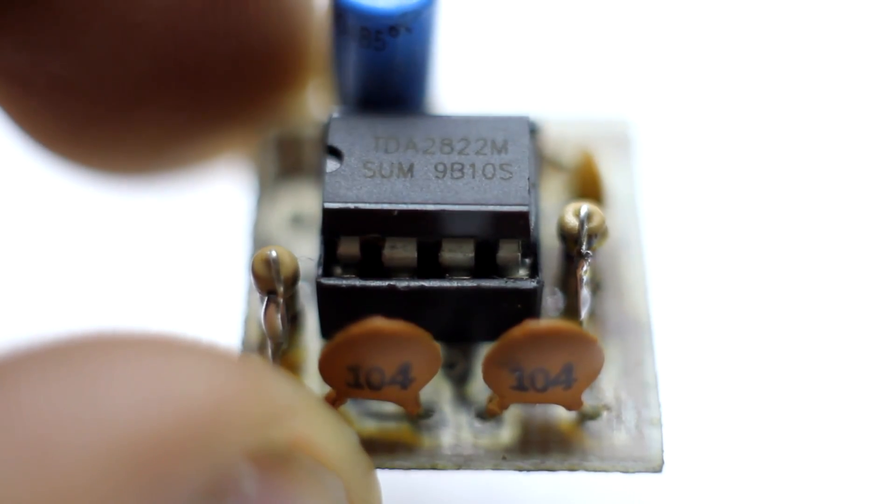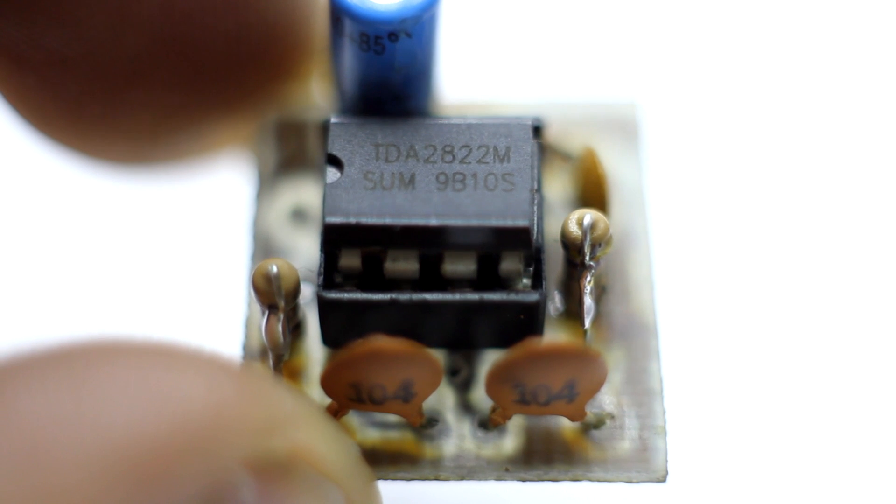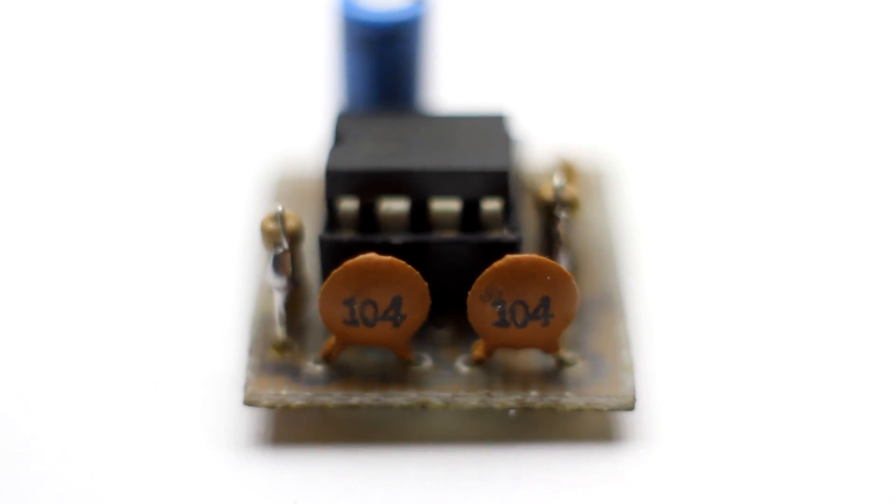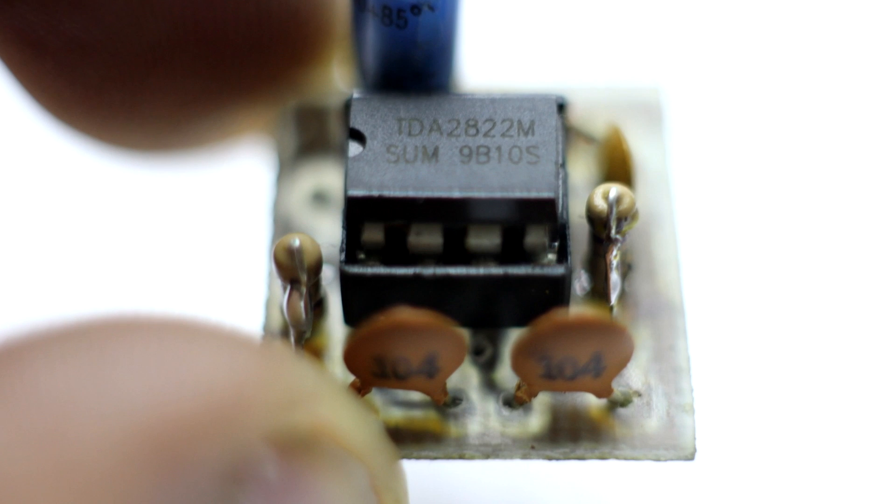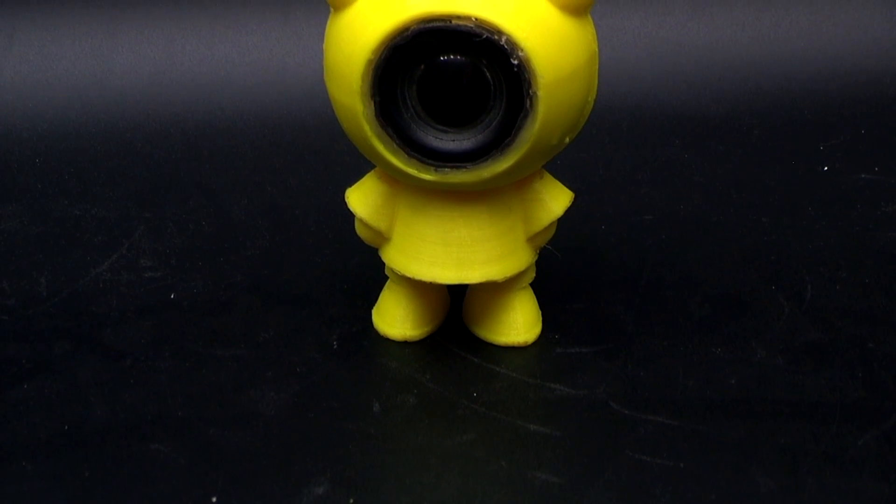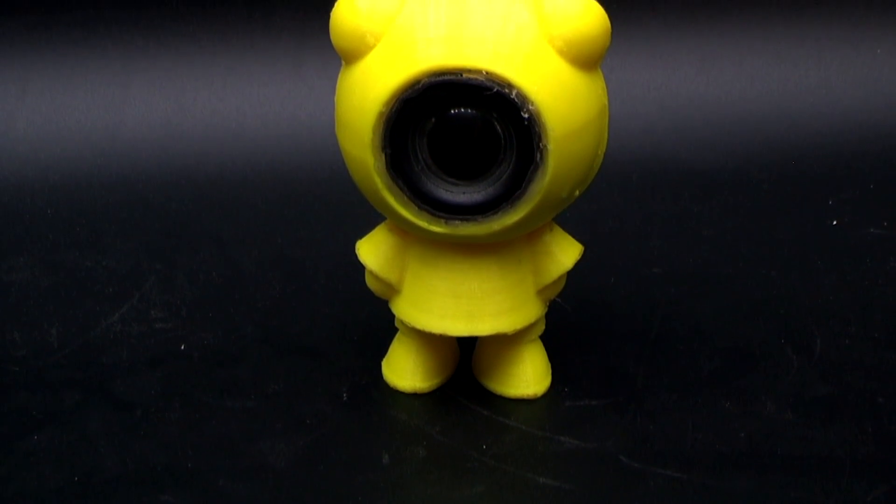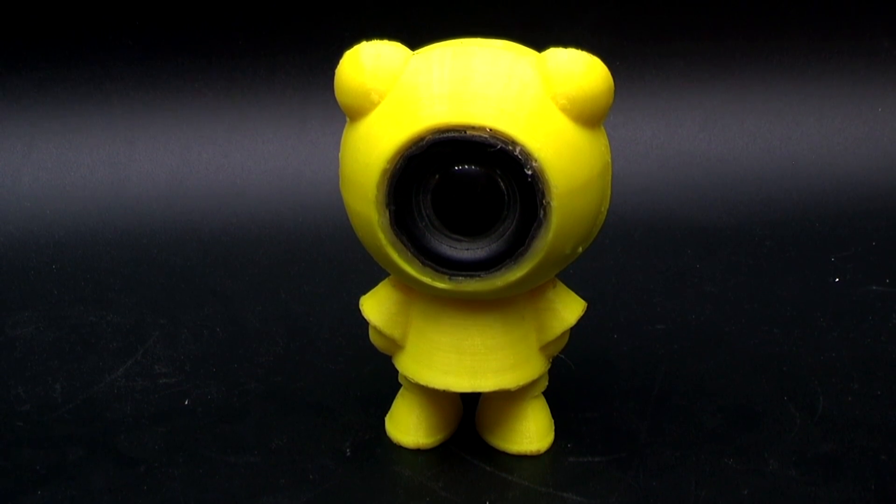A few words about the amplifier. At first I wanted to put here the TDA2822, a two-channel amplifier operating in the AB class. But this class in a portable system isn't the best solution because of the low efficiency.